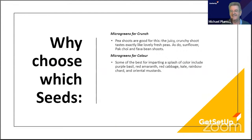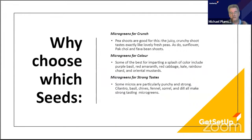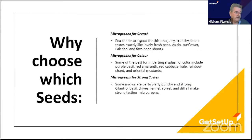Even fennel and dill are very attractive on their own. The other reason to choose a particular microgreen is strong taste. Some microgreens have a strong taste — the coriander, for example, is much like the full-grown plant. It may be unpleasant to some and pleasant to others.